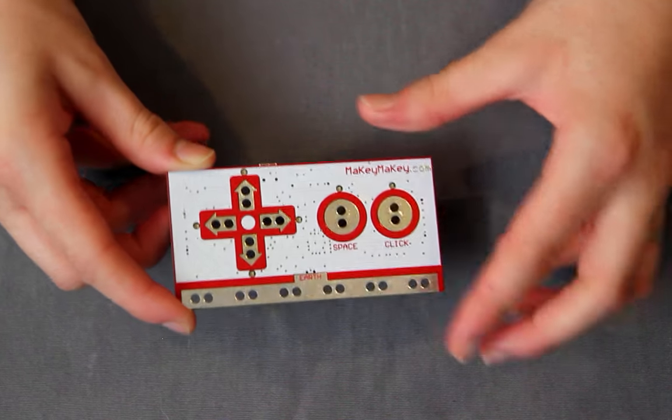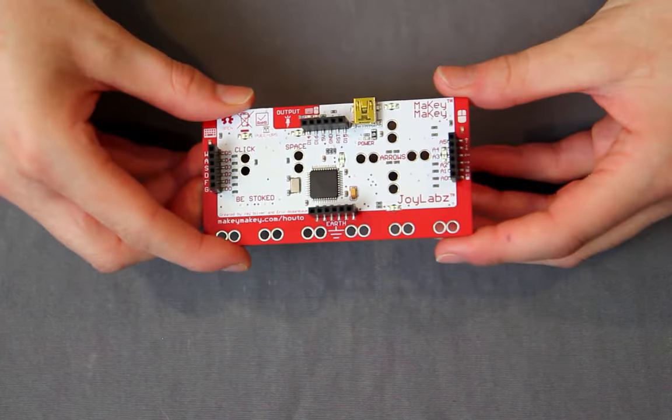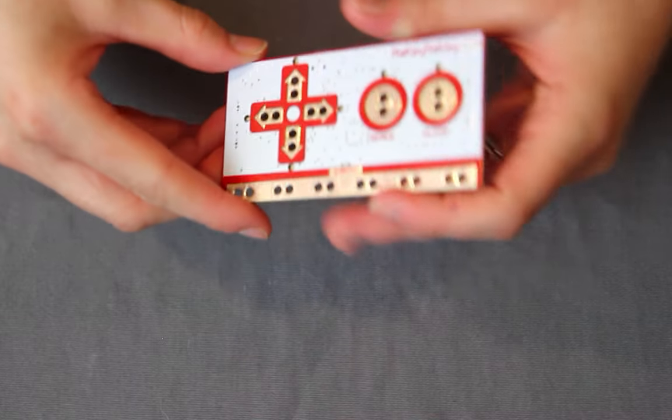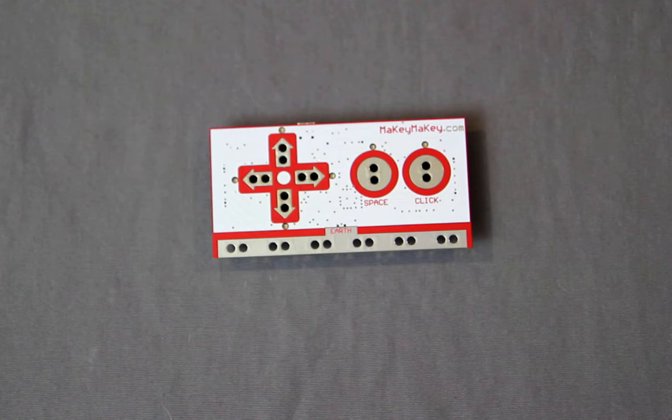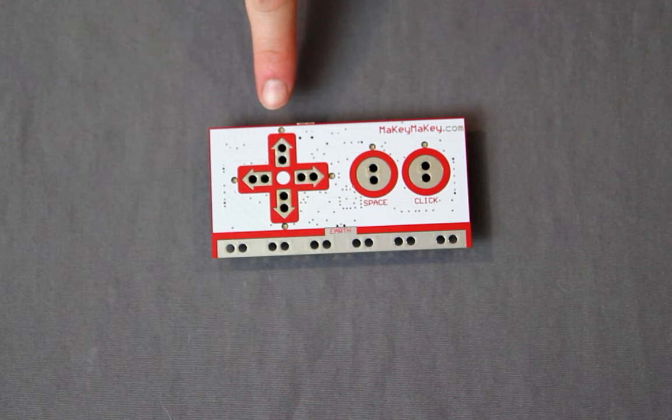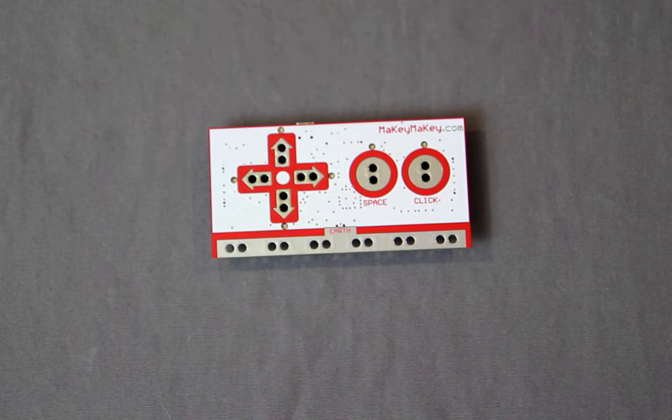Here's the Makey Makey board. There are lots of components of the board, but don't get overwhelmed. We'll talk about those other parts in future videos, but today we're mainly focusing on the arrow keys, space bar, and the bar along the bottom labeled Earth.